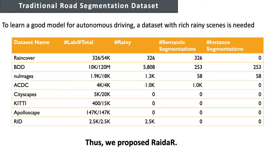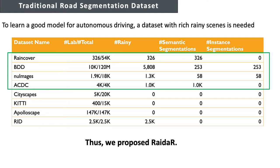To learn a good model for autonomous driving in rainy scenarios, a dataset with rich annotations is needed. We listed all the well-known street scene image datasets for training autonomous driving algorithms. As we can see, only RainCouver, BDD, NightImage, and ACDC have a small number of rainy segmentation masks, which is not sufficient for practical use.